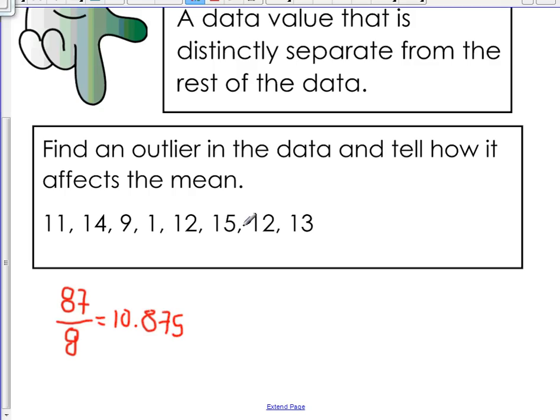Alright, so that is the mean with the outlier. Now, if we were to take away the outlier and add all of the numbers up and disregard the 1, you'll see that we'll get a very different number. Let's do that now.